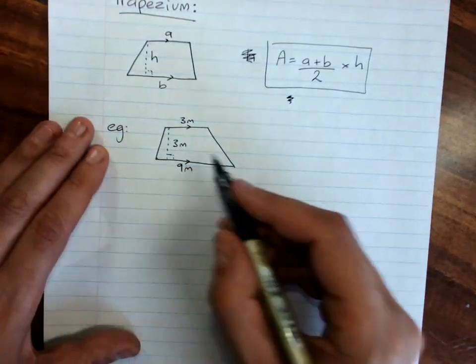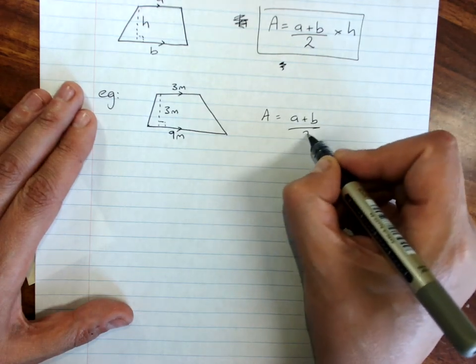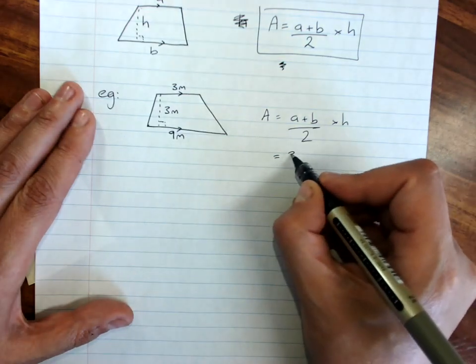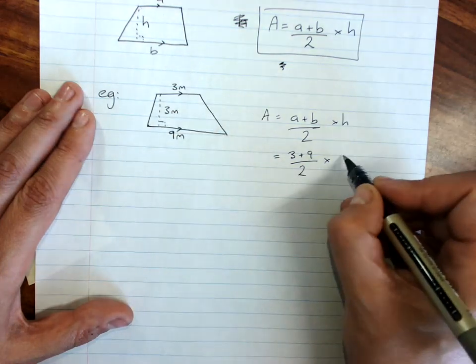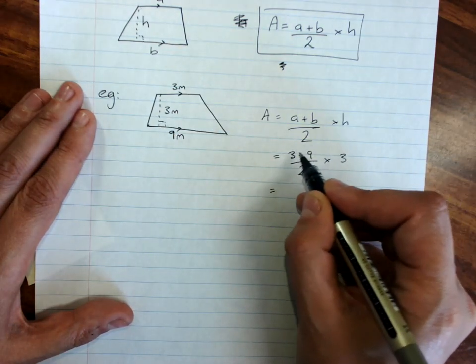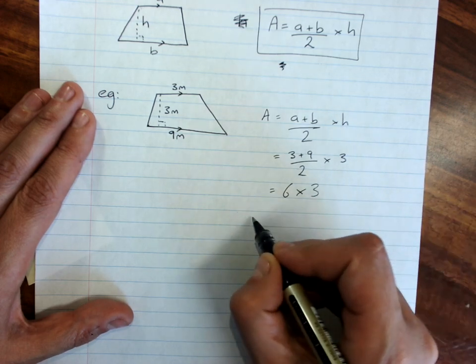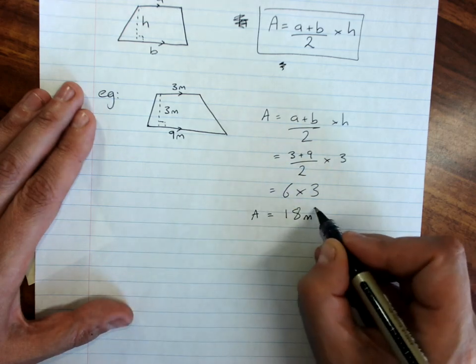For our example, we write our formula. A and b are the parallel sides, so that's 3 plus 9 divided by 2, times the height, which is 3. So 3 plus 9 is 12, 12 divided by 2 is 6, so it's 6 times 3. Area is 18. We were in meters, so it's 18 meters squared.